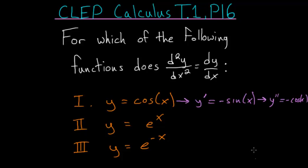You can clearly see that this first derivative and the second derivative aren't equal. After canceling the negative signs, we have sine x equal to cosine x. So this one's not right. And for y is equal to e to the x,